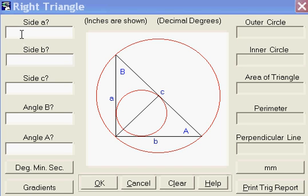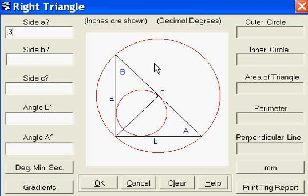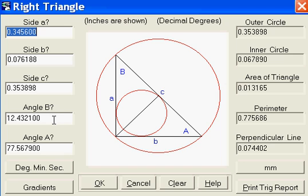Let's say we know side A is .3456 and angle B is 12.4321. Once we hit the answer key, it knows it has two pieces of information and that's all it needs, so it gives us the answers right there.